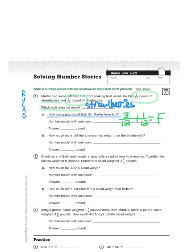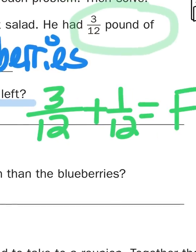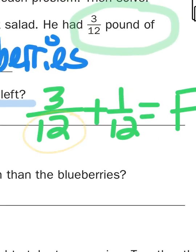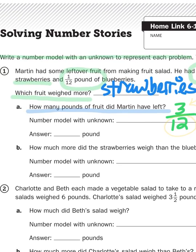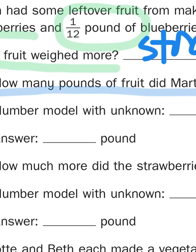So when I have like denominators, meaning that the bottom numbers are the same, all I have to do is worry about adding the top numbers. We know that three plus one is four, so the answer to my question is four-twelfths of a pound.